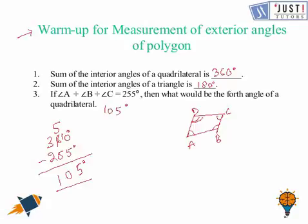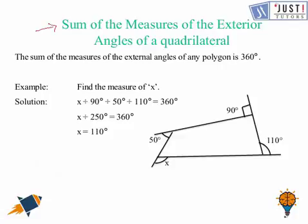Now we move ahead and we are going to learn about sum of measurement of exterior angle of a quadrilateral. So as we have already learned about the interior angle, now what about the exterior angle? So sum of the measurement of external angle of any polygon is 360 degrees.